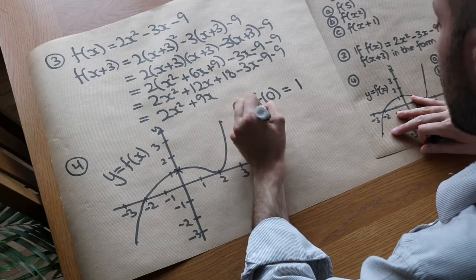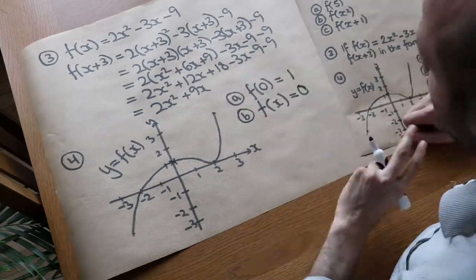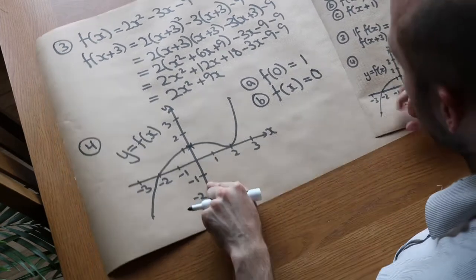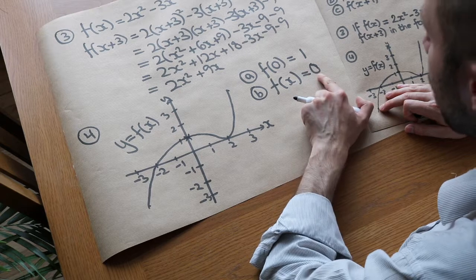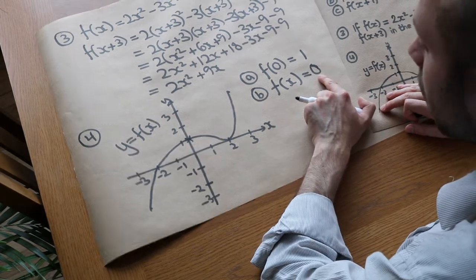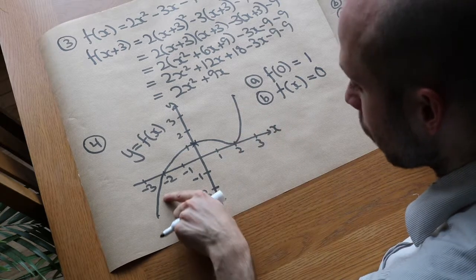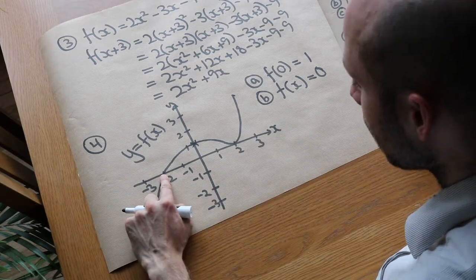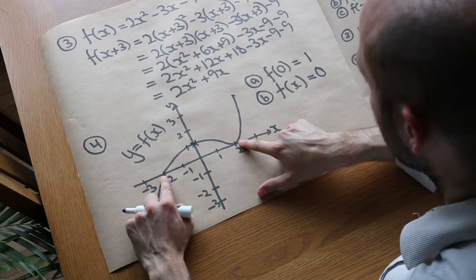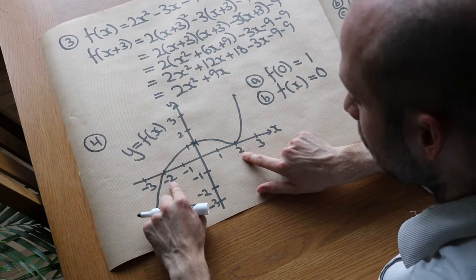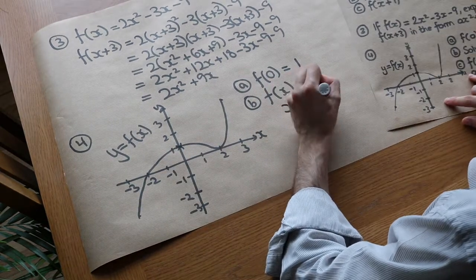Next, we've got f of x is equal to zero, and it wants us to solve it. There's no algebra to be done here — it's just using the graph. It's saying what x values give you a y value of zero. Well, on the graph y is zero at two points. What x values give that y value of zero? Well, it's minus two and two. So x is minus two or two.